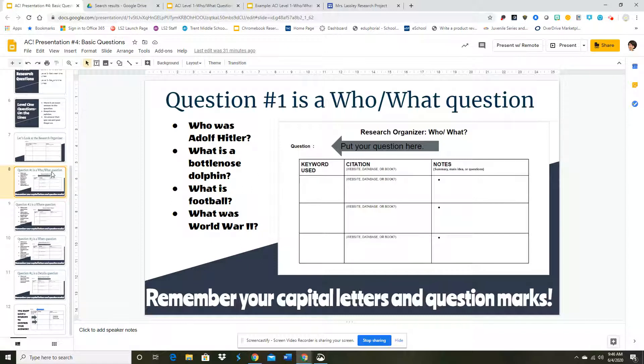If you're doing a person, you're going to say who was if they're dead, but if they're still alive, who is. So who was Adolf Hitler? If you're doing an animal, what is a bottlenose dolphin? What is football? What was World War II?